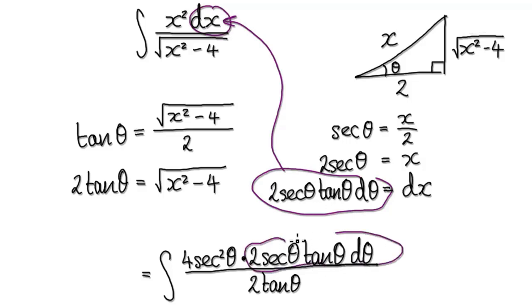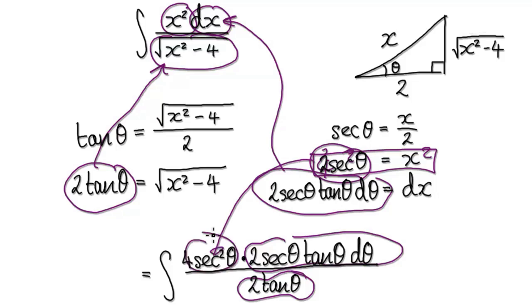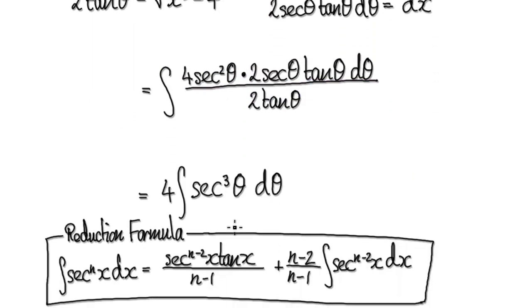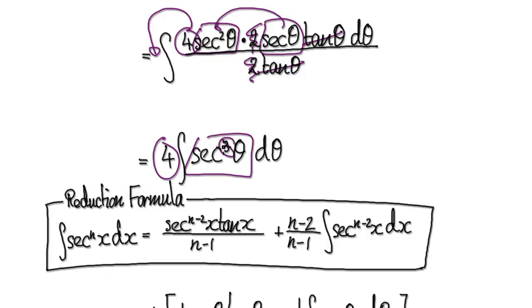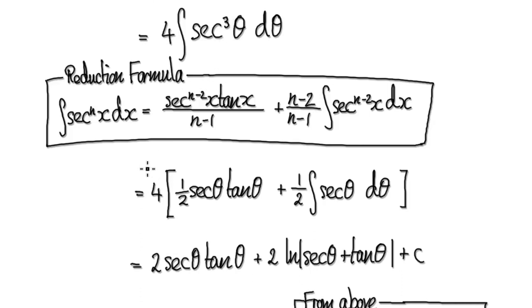Putting this into the integral gives you the whole substituted expression. So now x² = 4 sec²θ — put that in here. This whole thing will simplify: terms cancel out, the 2s cancel, take the 4 around. Merging the blocks together gives you a power of 3. So now use the reduction formula which we've seen before, and using the reduction formula that will then take you to the next step.